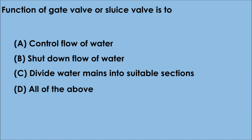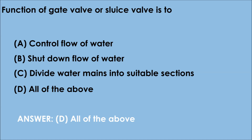Question 3. The function of a gate valve or sluice valve is to: A. Control flow of water, B. Shut down flow of water, C. Divide water mains into suitable sections, D. All of the above. The correct answer is option D — all of the above.